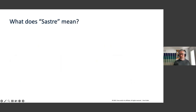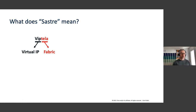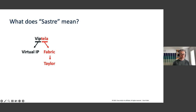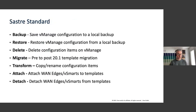One of the first questions someone may ask is what does SASTRE mean. If you look at the original acquisition Cisco did for the SD-WAN solution, it came from a company called Viptela, where 'vip' is short for virtual IP and 'tela' is Spanish for fabric. So Viptela is essentially a virtual IP fabric. We took 'fabric' as a Spanish word, and then a 'tailor' is someone who works with fabrics to build things — and 'tailor' in Spanish is 'sastre'. That's where the name came from.